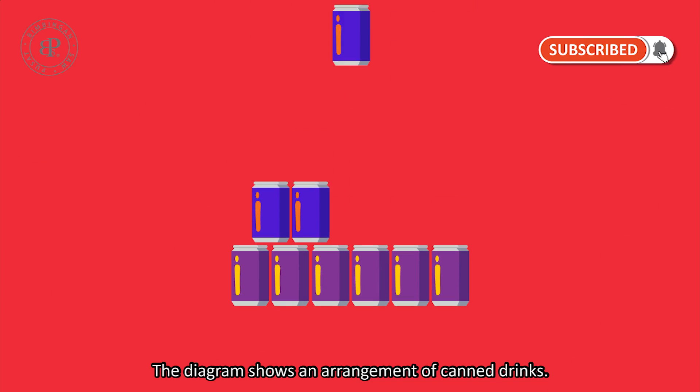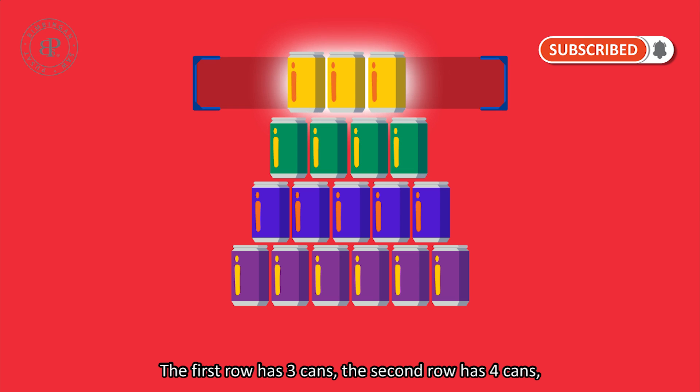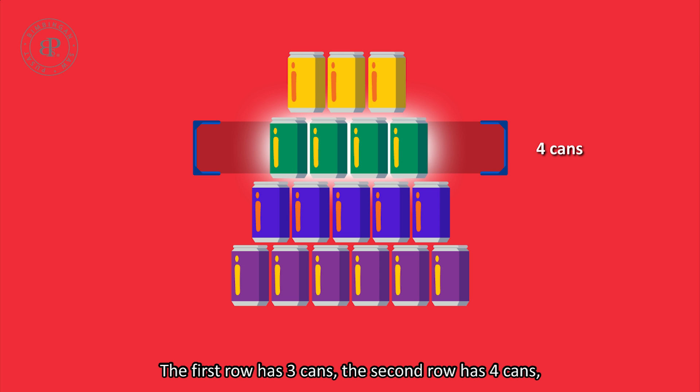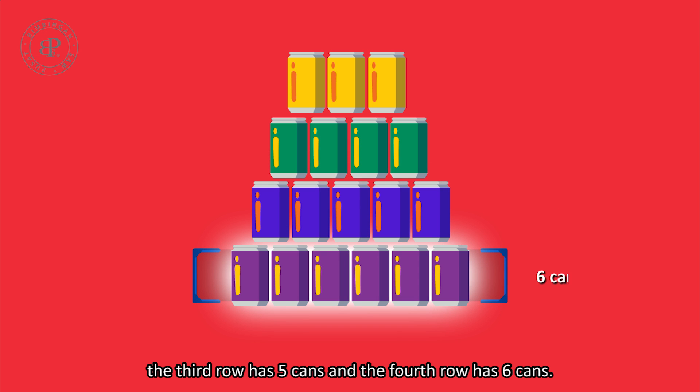The diagram shows an arrangement of canned drinks. The first row has 3 cans, the second row has 4 cans, the third row has 5 cans, and the fourth row has 6 cans.